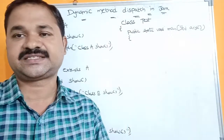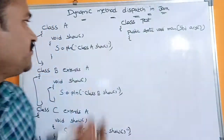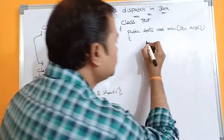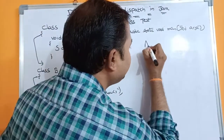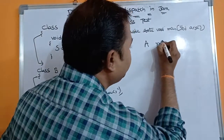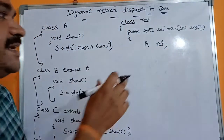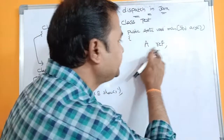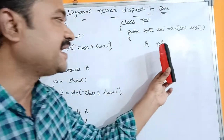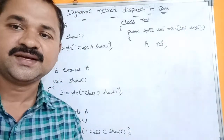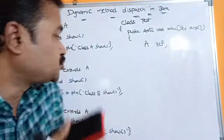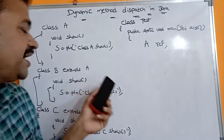While implementing dynamic method dispatch, we always create a reference for the parent class. Here A is the parent class, so we create a reference for the parent class. We should not create an object for the parent class — only a reference.